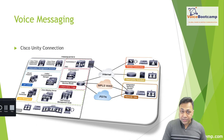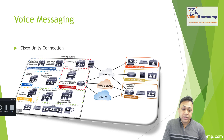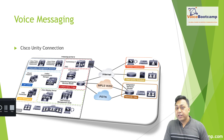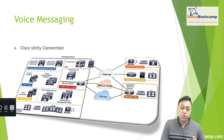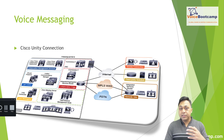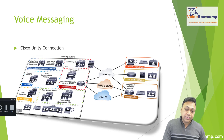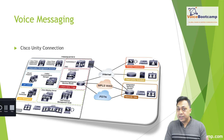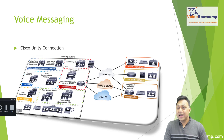Voice messaging is provided by Cisco Unity Connection. Unity Connection can provide voice messages and unified messaging all under the same platform. It is mostly designed to work internally within an organization, but it is a SIP-based device so it can communicate with any third-party call control device.